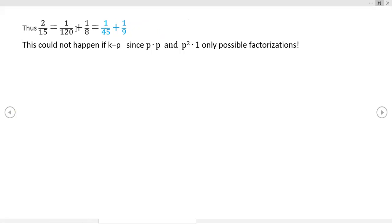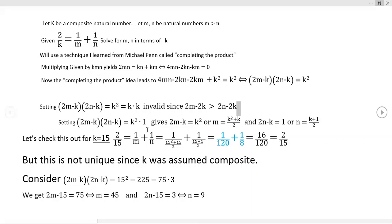Again, I repeat, this could not happen if p were a prime. And again, I'm just repeating myself here. But if k were equal to p, p times p and p squared would be the only possible factorizations, right? That's kind of interesting. So it would be unique if p were prime. And again, that's all the way back to right here. This would be the only statement we could write down. This is the only statement we could write down owing to the primality of p.